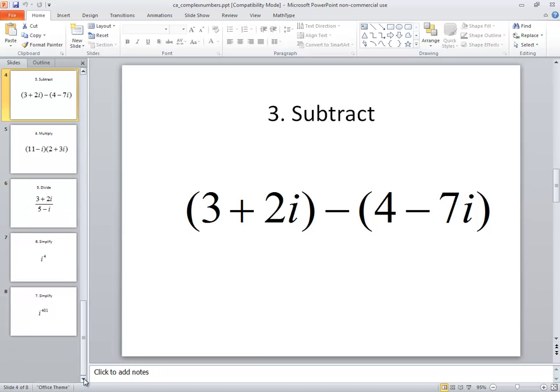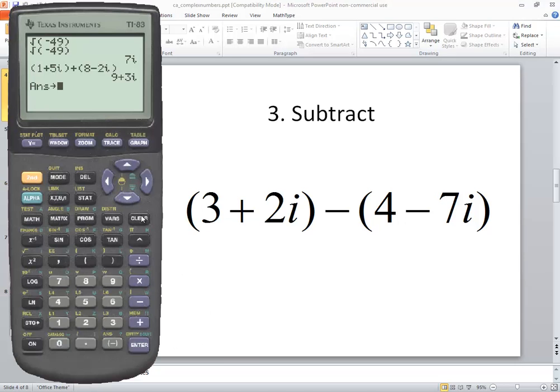Now for subtraction, again, you pretty well type it as you see it. So do beginning parentheses, three plus two, second decimal for the i, closing parentheses minus beginning parentheses, four minus seven, second decimal for the i, closing parentheses, and press enter. And our answer will be negative one plus nine i.